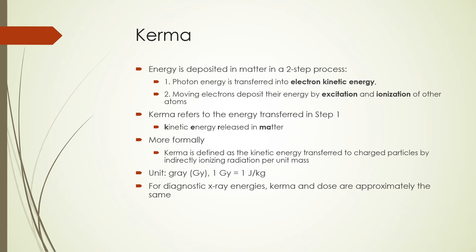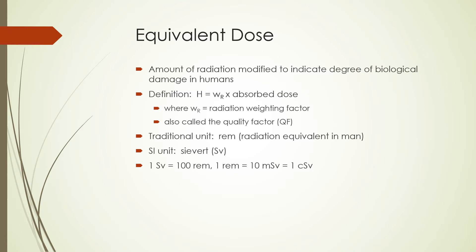The effectiveness of different types of radiation to produce a particular chemical or biological effect varies with the linear energy transfer, or LET, of the radiation. Recall that LET is the energy deposited per unit path of incident radiation. The equivalent dose was defined to account for this variation. Equivalent dose is the amount of radiation modified to indicate the degree of biological damage in humans. Equivalent dose H is equal to the absorbed dose multiplied by a radiation weighting factor W-sub-R, also called the quality factor of the radiation. The traditional unit is the REM, which means radiation equivalent man. The SI unit is the sievert, where one sievert is equal to 100 REM.